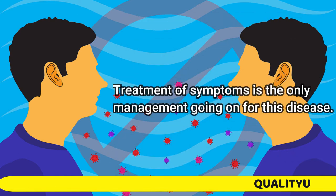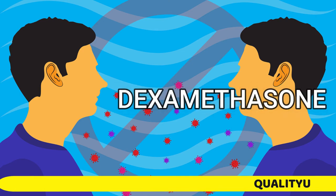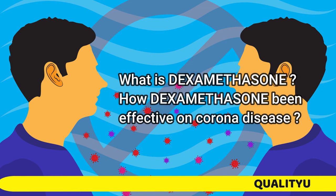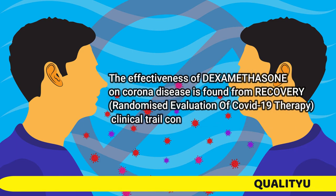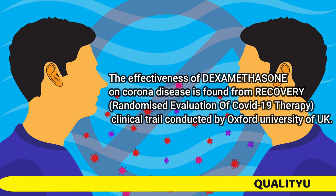Treatment of symptoms is the only management going on for this disease. What is Dexamethasone? How has Dexamethasone been effective on Corona disease? The effectiveness of Dexamethasone on Corona disease is found from the RECOVERY — Randomized Evaluation of COVID-19 Therapy — clinical trial conducted by Oxford University, UK.